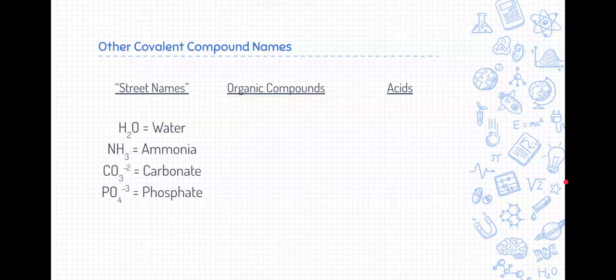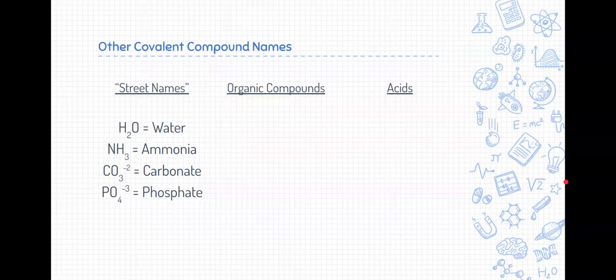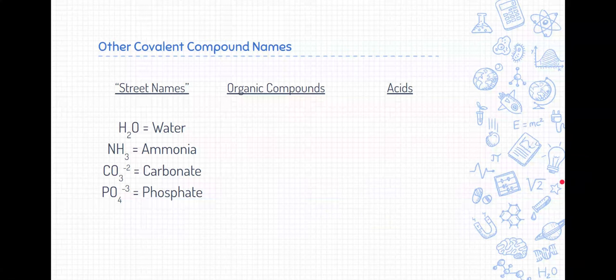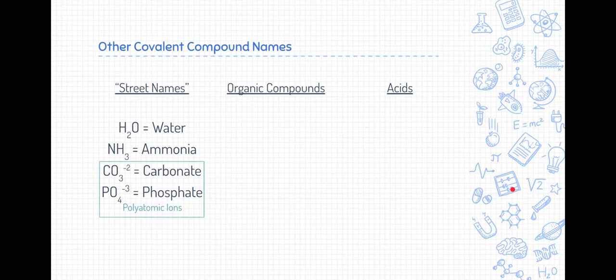These are covalent compounds that just have had names that we've named them forever. For example, H2O, we typically call water. That stems from an Old English or Proto-Germanic word that means wet. So we've been calling H2O water forever. Sure, we can also call it dihydrogen monoxide, but we just call it water. The next one is ammonia. Ammonia, actually, the name stems from the god Amon, an ancient Egyptian god, because they used this chemical when they did ancient Egyptian rites honoring that god. The last two might seem a little familiar. We actually saw them when we were doing ionic compounds. These are polyatomic ions that have a specific charge. They're kind of weird covalent compounds that have a charge that we can use in ionic compounds, but they are covalent compounds in themselves because they're only made of non-metal elements.